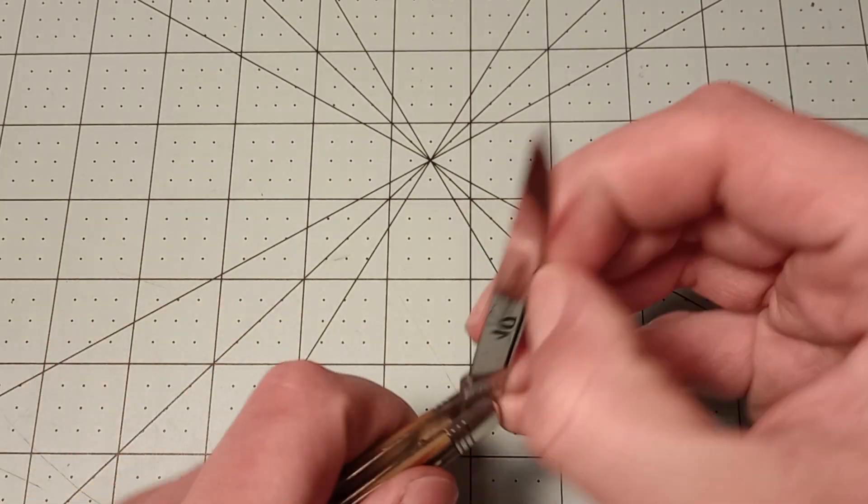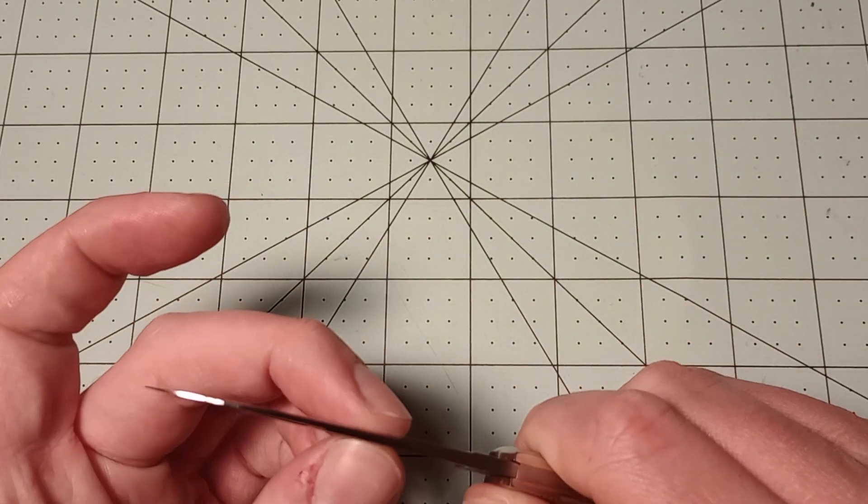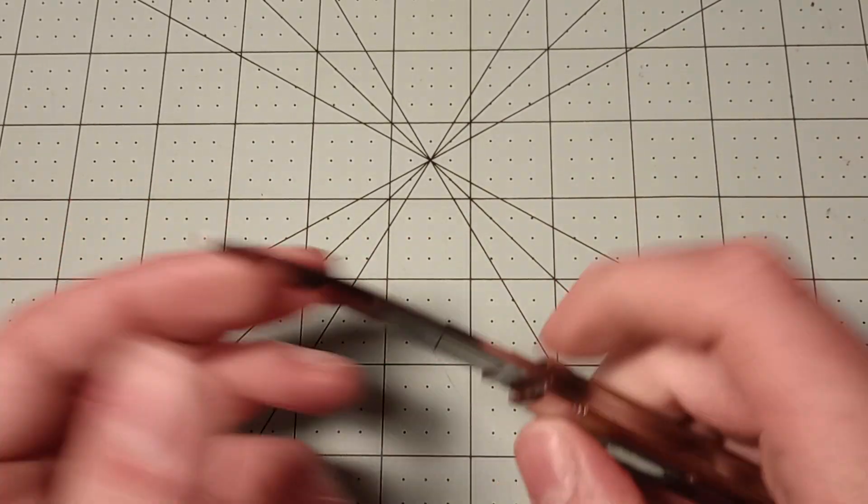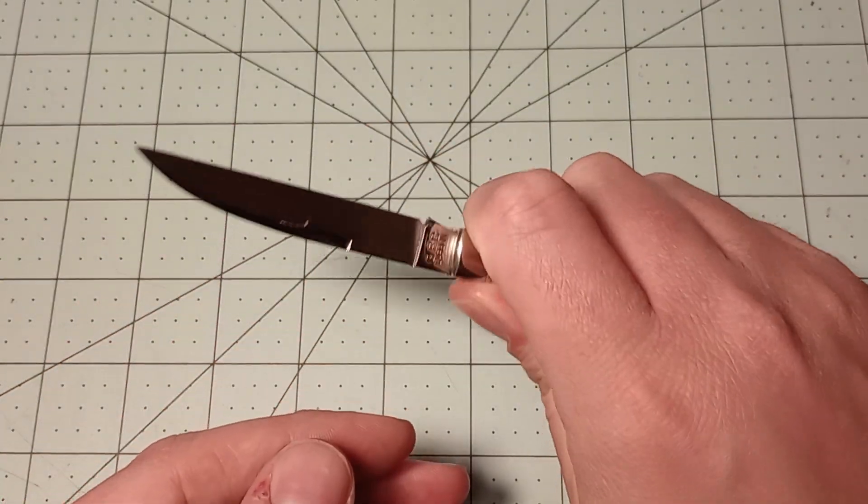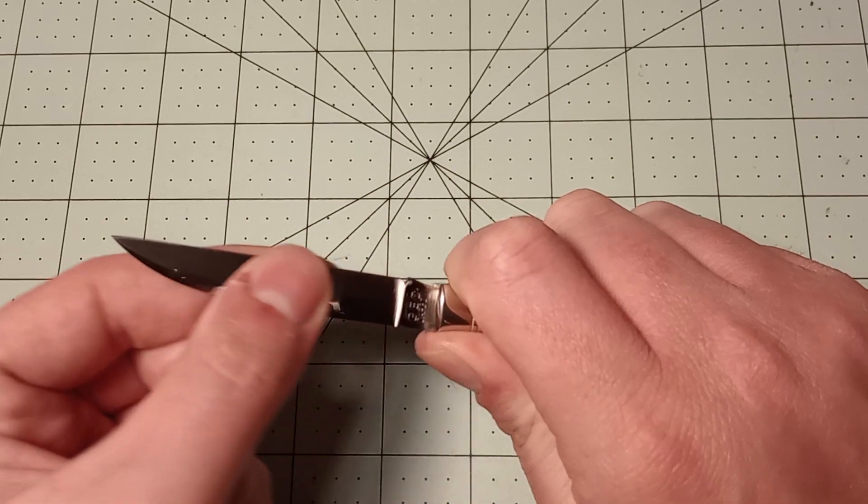My whip did have a slight amount of blade play. This knife doesn't have any. And this one, since it's a two blade, is a little bit thicker. Which is nice. You get a really good hold on it. Feels good in hand.